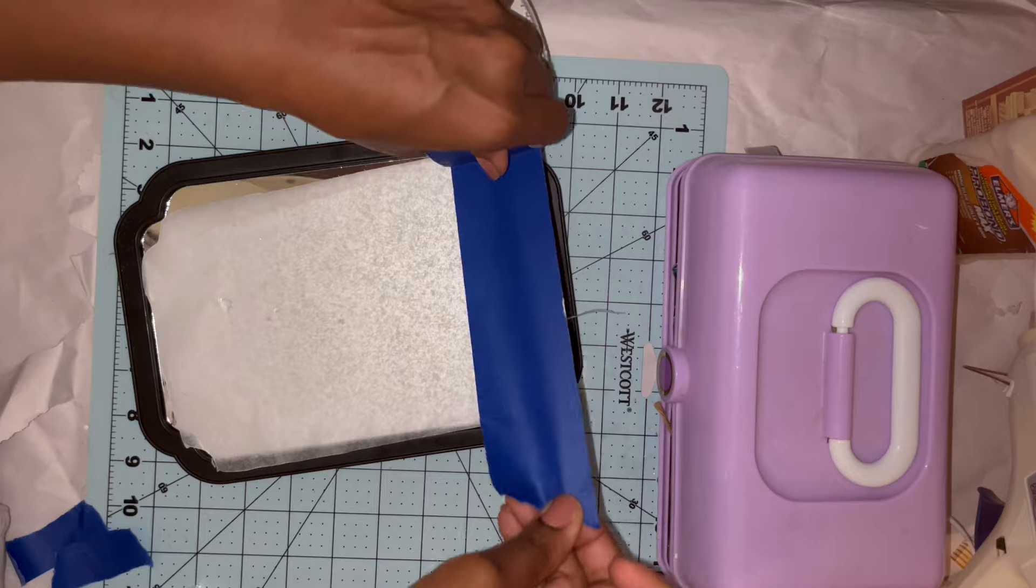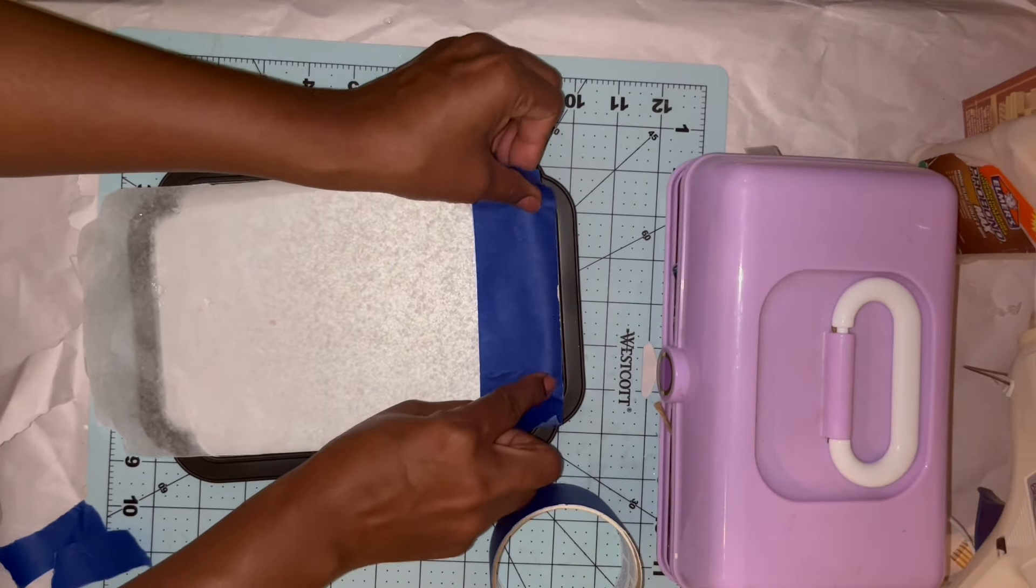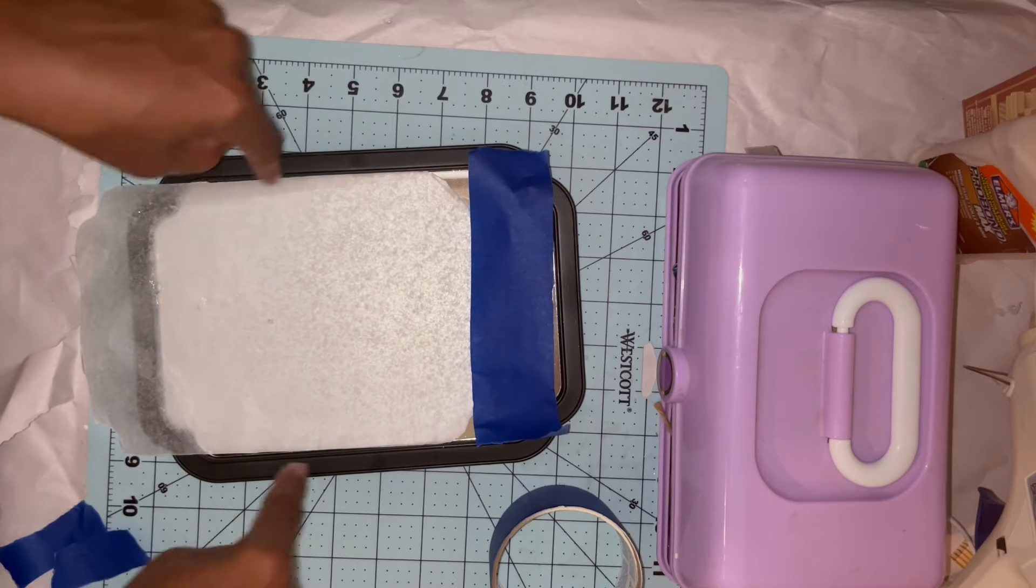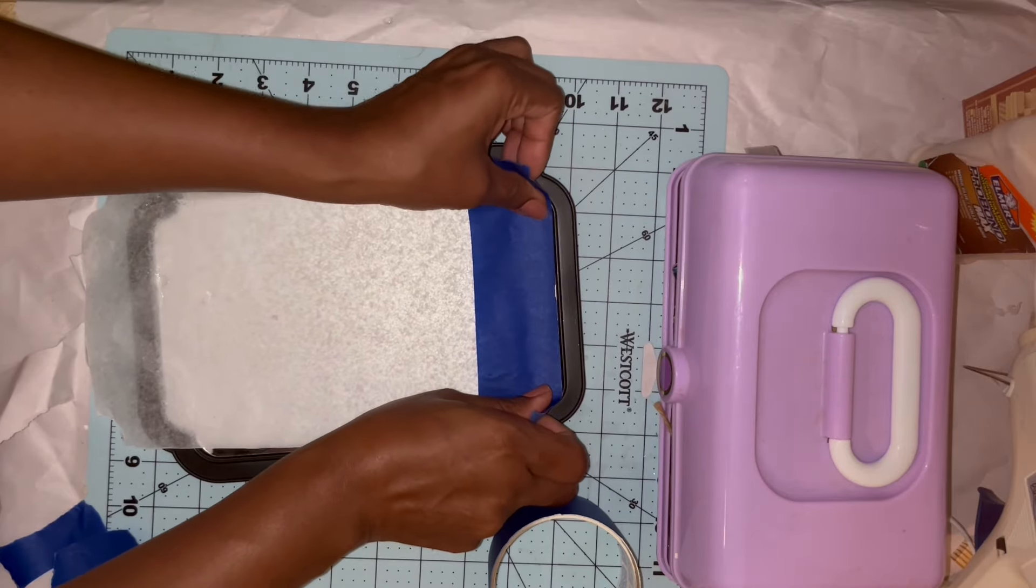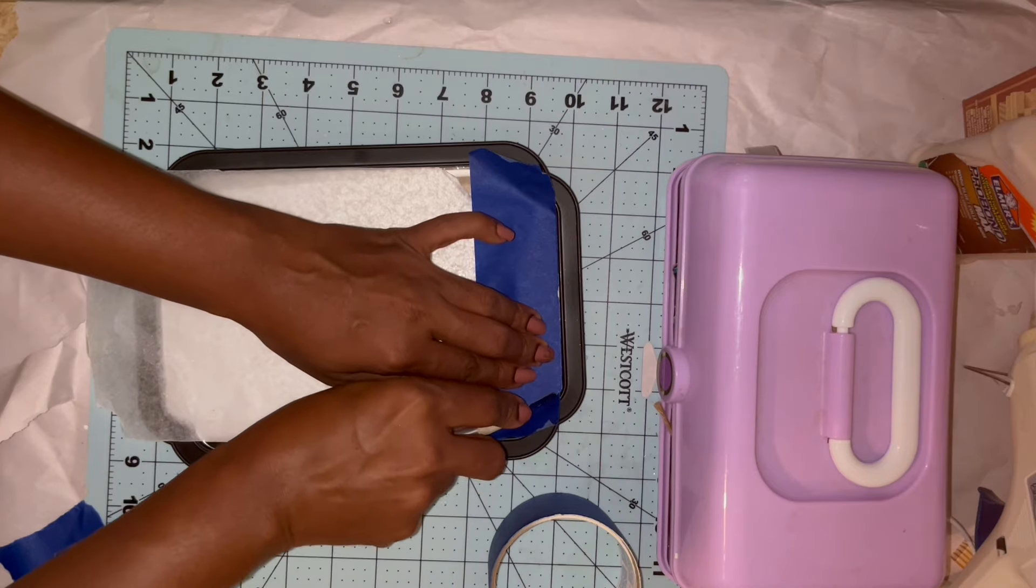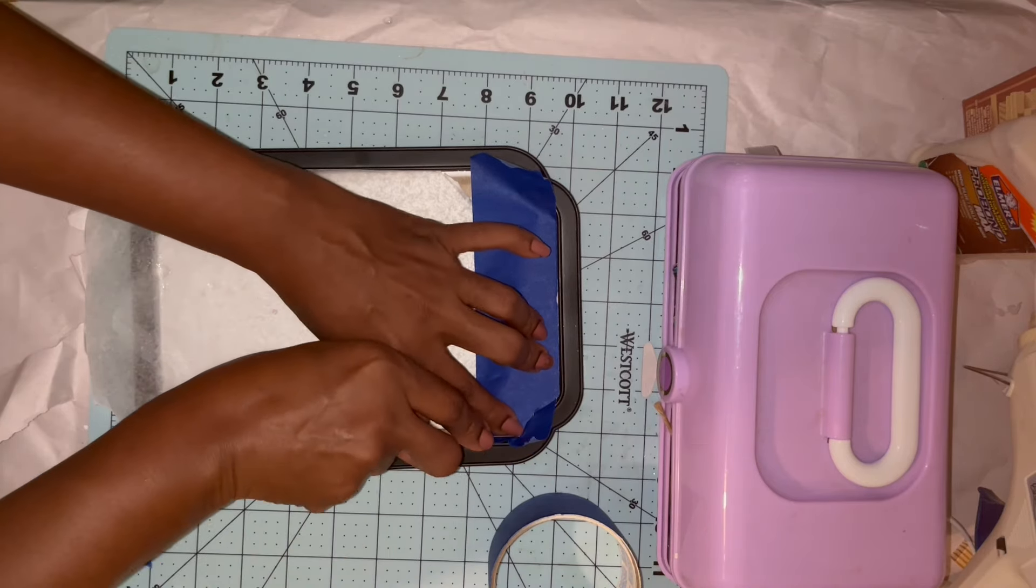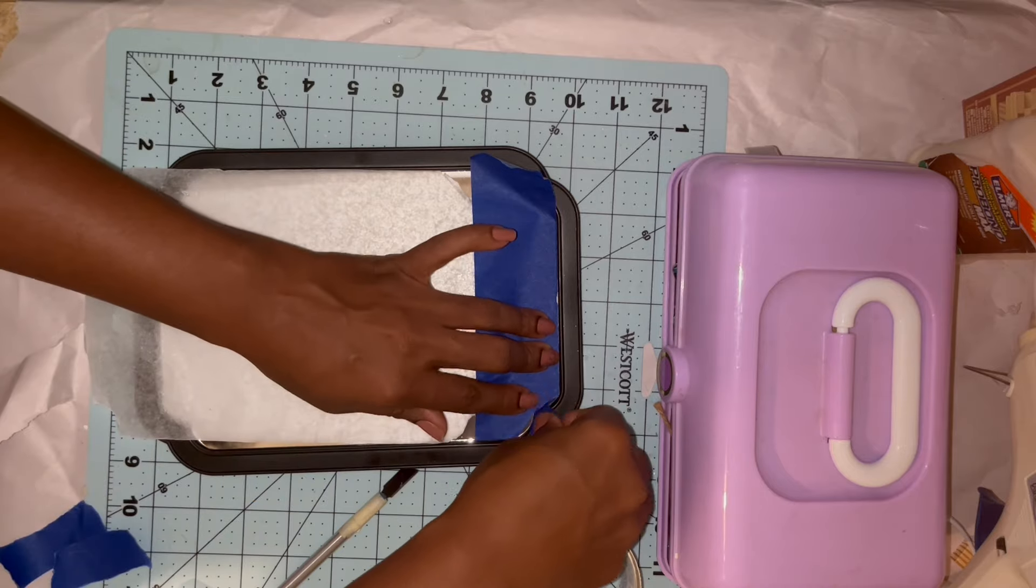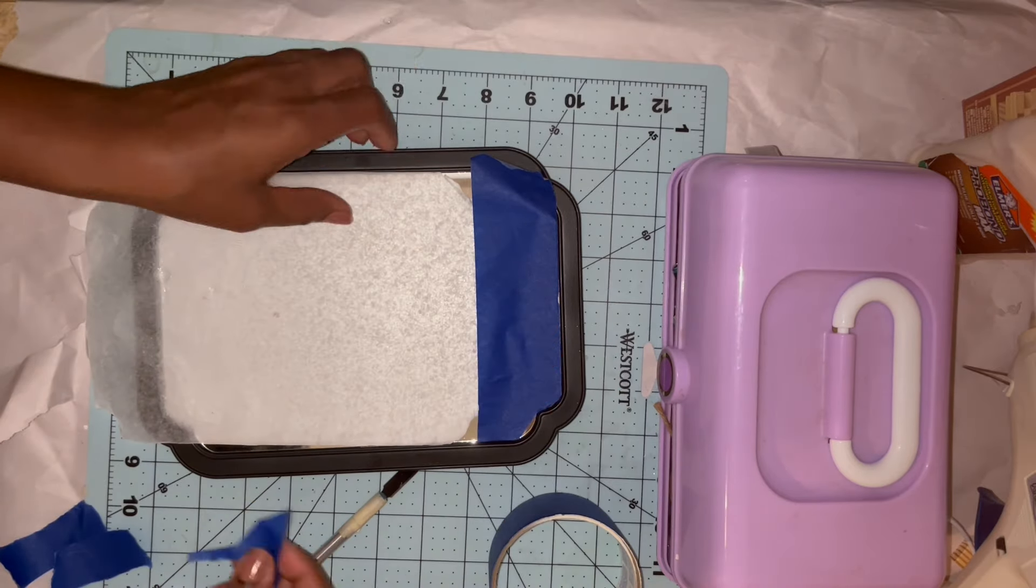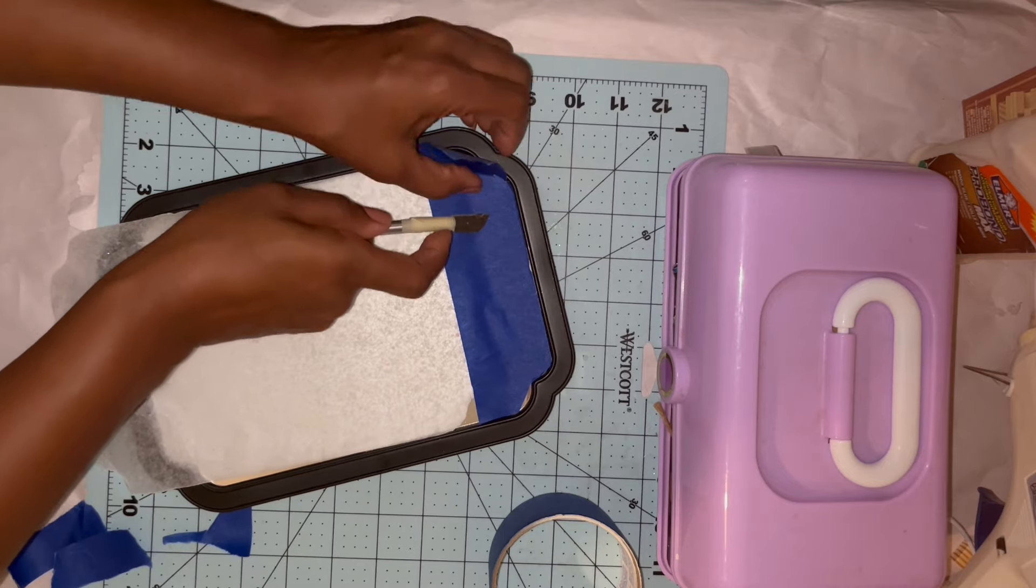So I'm just going to pull a bit of the wax paper down so I can start to get my tape added, just laying my tape directly down. And then I'm going to use my craft knife to just cut around so I have a perfect fit around the shape of the mirror. After I get my first piece cut, I'm just going to work my way around doing the same thing, just adding tape and cutting around.